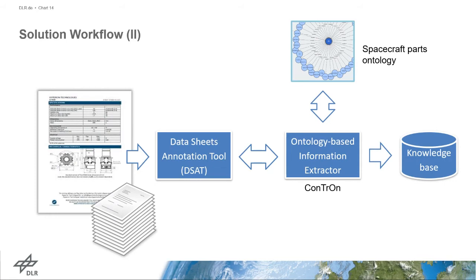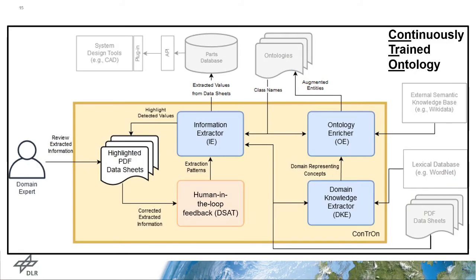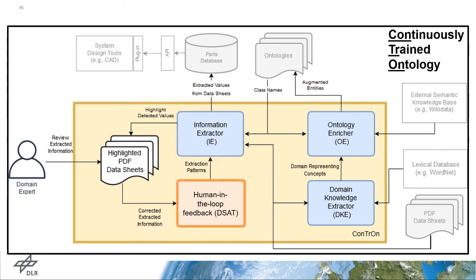Based on the previous solution, we add an ontology-based information extractor between the annotation tool and the knowledge base. This extractor is called CONTRON — a continuously trained ontology system that extracts information from data sheets and improves ontologies with external semantic knowledge bases such as Wikidata. The enriched ontologies are used by the information extractor as a list of properties to search in data sheets, and the detected properties along with their corresponding values are extracted. However, the accuracy and coverage of detected property-value pairs are not yet satisfactory, so we need a human-in-the-loop process to provide feedback and improve the system further.